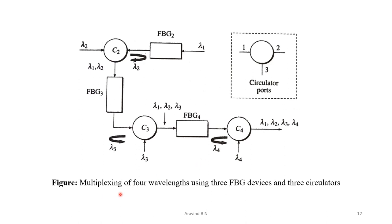Now for the multiplexing operation, we again make use of FBG devices along with circulators. Three FBGs are used: FBG2, FBG3, and FBG4, along with three circulators: C2, C3, and C4. The multiplexing operation combines various wavelengths of light. Whatever process happens at the first stage is replicated at each subsequent stage, each time adding one more wavelength to the existing combined signal.